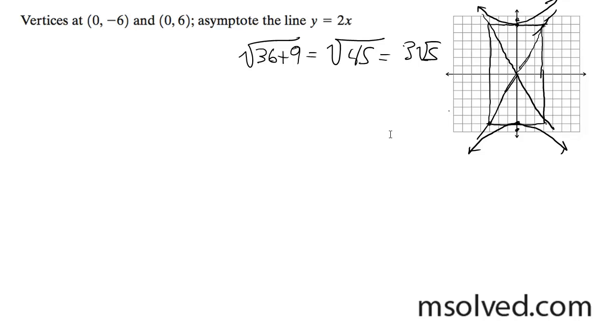And that's it. Oh wait, I need to write the equation. It's going to be y squared over 36 minus x squared over 9 equals 1. Okay, now we're done.